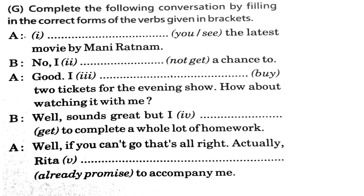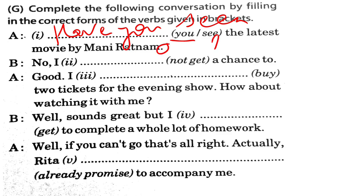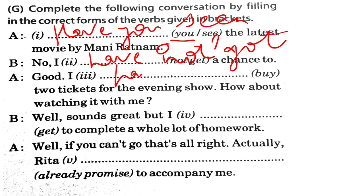Complete the following conversation by filling in the correct forms of the verbs given in brackets. The subject is 'you', so: 'Have you seen the latest movie by Mani Ratna?' It's a question, so put a question mark. 'No, I have not got a chance to.' 'I have bought two tickets for the evening show.' The third form of 'buy' is 'bought'.